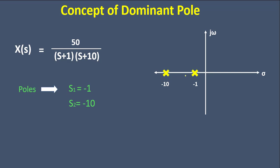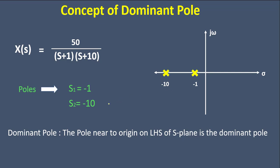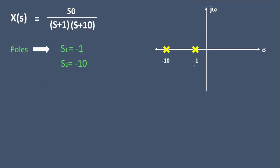We can plot these poles on the s-plane. We have our first pole at s equals minus 1 and the second pole at s equals minus 10. The definition of a dominant pole says: the pole nearest to the origin on the left-hand side of the s-plane is the dominant pole.